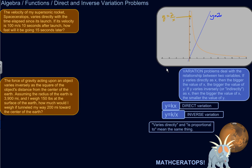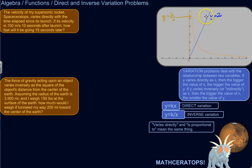If y varies directly as x, then the bigger the value of x, the bigger the value of y. This blue function is an example of a direct variation where y varies directly as x — as x gets bigger, y gets bigger and bigger.